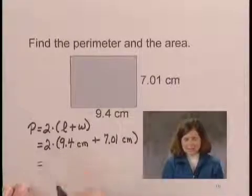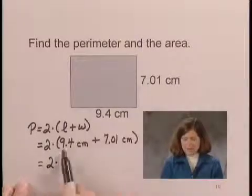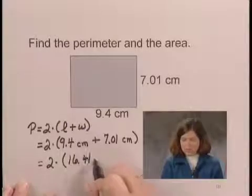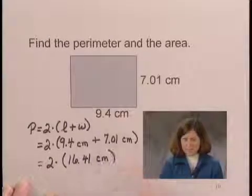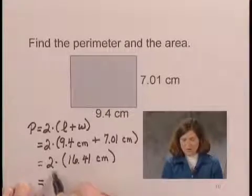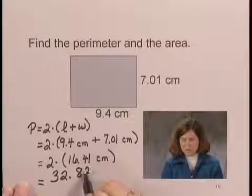And adding inside the parentheses, we have 2 times, adding 9.4 and 7.01, we have 16.41 centimeters. And multiplying 2 times 16.41, we have 32.82 centimeters.